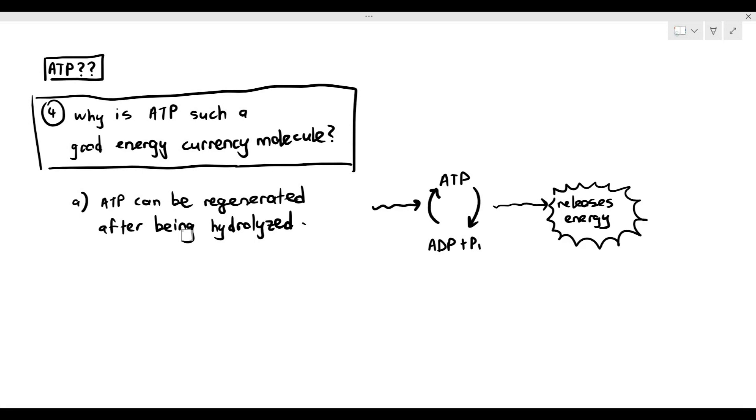But when the cells need more ATP, it can just join the ADP and phosphates together and ATP is thus regenerated. So that's a good thing. So it's an unlimited source of energy as long as respiration continues to happen, by the way.